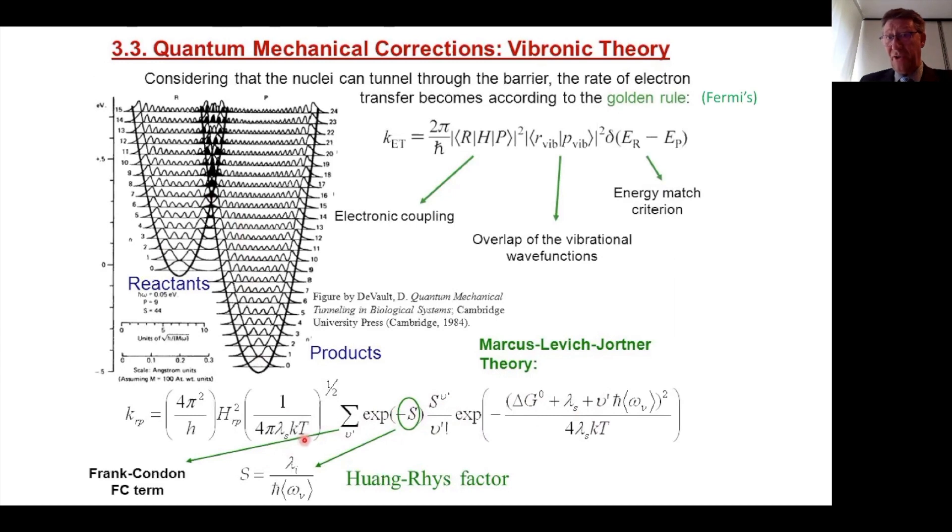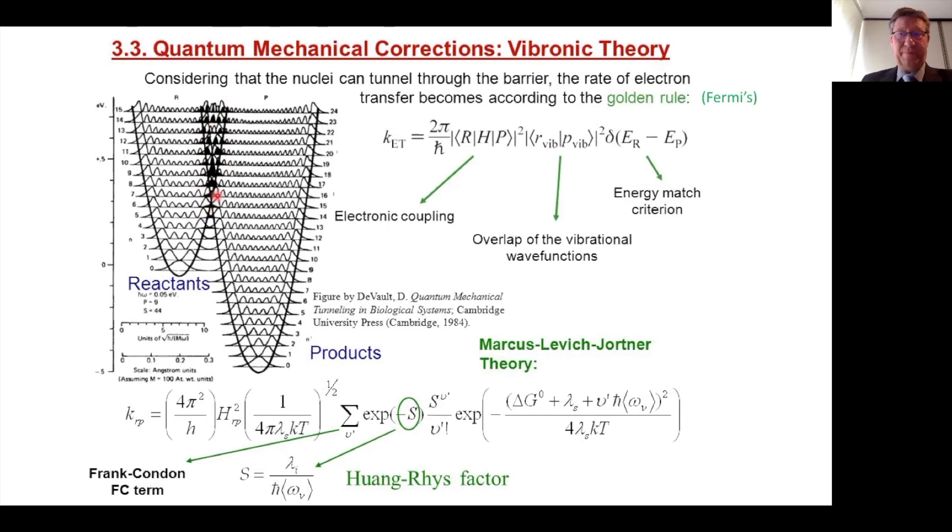This is the same equation that I showed you before, and this shows you this Franck-Condon factor in the normal region. This is the classical Marcus equation. We see that the rate drops very fast. In the semi-classical Marcus equation, the rate goes down more slowly, due to overlap of vibrational wave functions. This is the overlap of vibrational wave functions in the inverted region, and hopefully you see that here the black area is larger. This overlap enhances the rate.